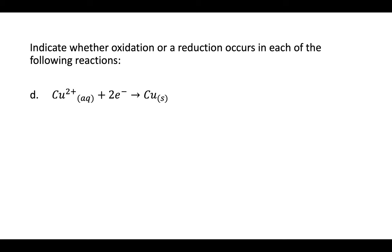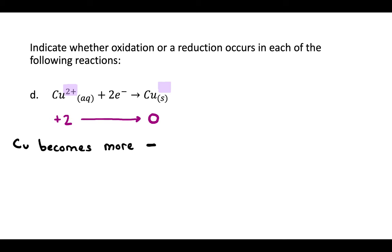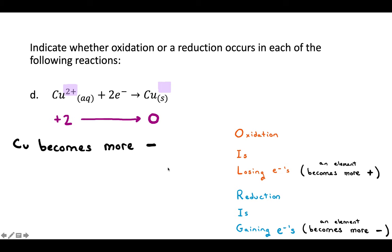Indicate whether oxidation or reduction occurs in the following reaction. Our element is copper, and it starts with a plus two charge on the left side of the arrow. On the right side, nothing is written at the top right of copper, meaning it has a zero charge. So copper went from a plus two to a zero charge — its charge became more negative. If your charge becomes more negative in the course of a reaction, reduction has occurred. So here, copper was reduced.